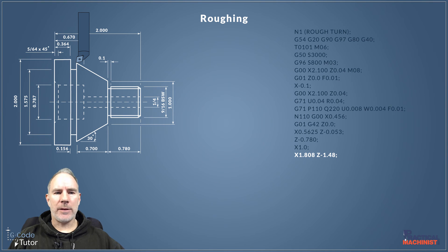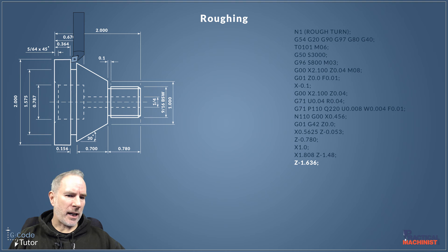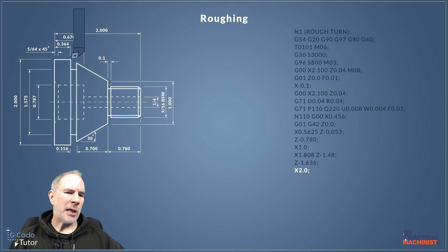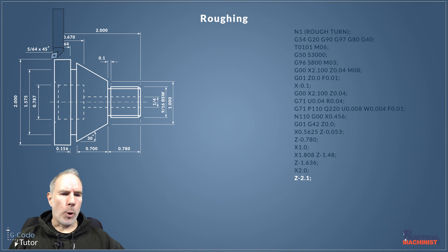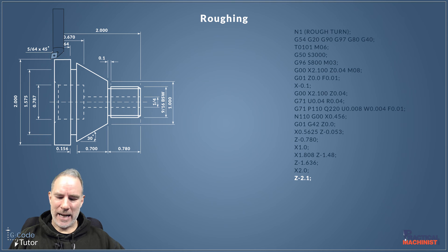Knowing the taper endpoint, our next line moves to X1.808 and Z-1.48. We then cut straight along where the recess is to the shoulder face — we'll machine the grooves with a grooving tool in a later video. We cut a flat across there and come up to X2.0 inches for the major diameter. When cutting through the profile in Z, we go 0.1 past the end to allow for the width of the parting-off tool, ensuring a clean surface for parting.